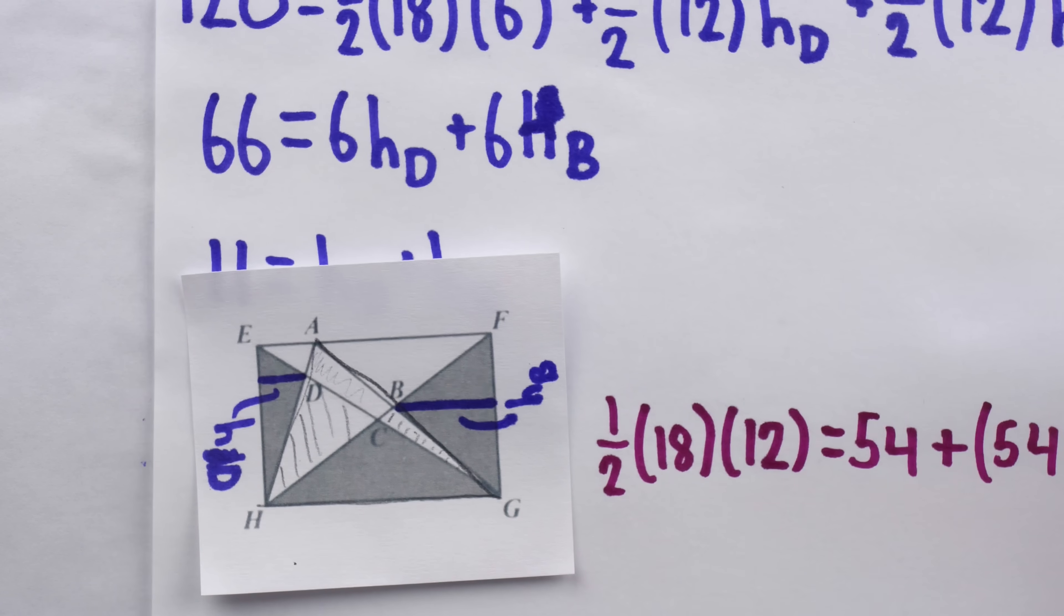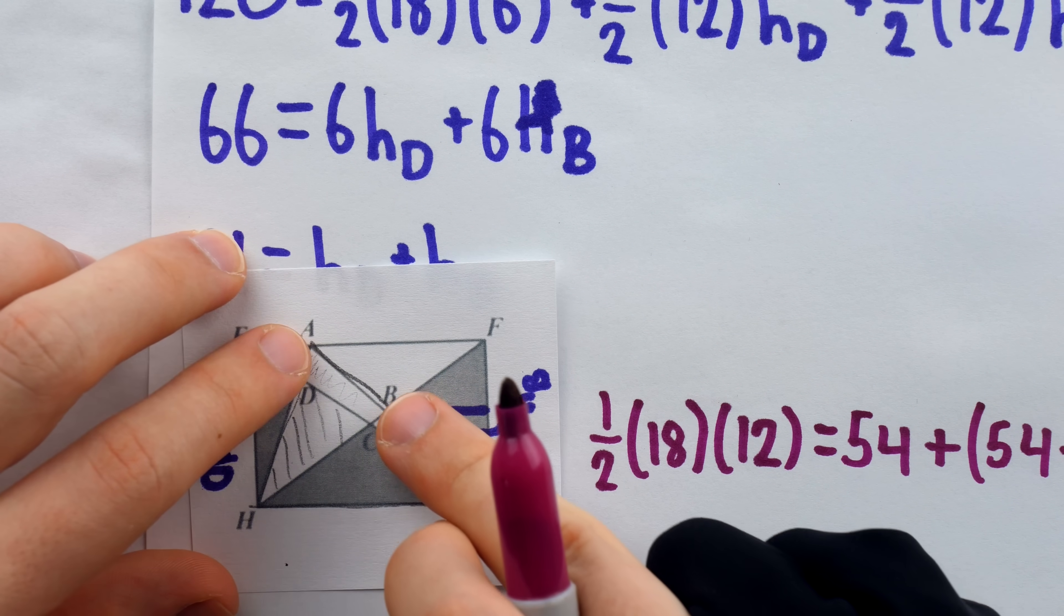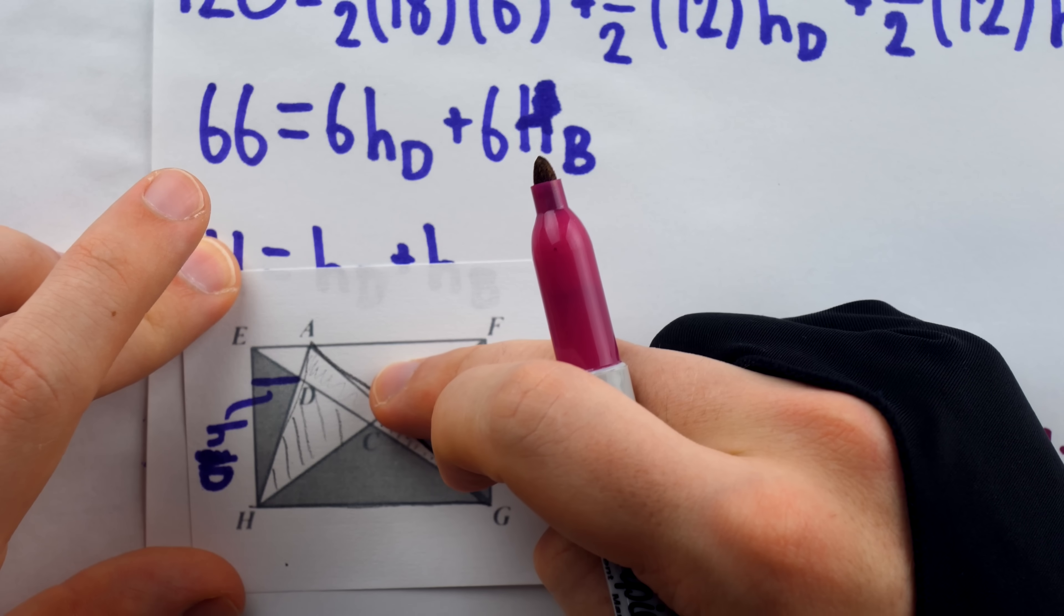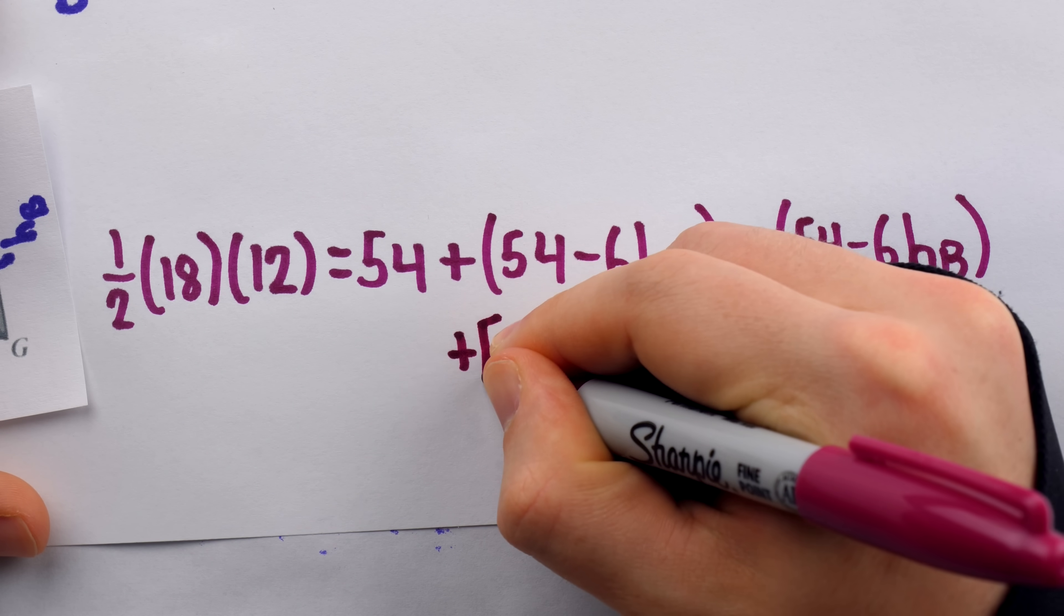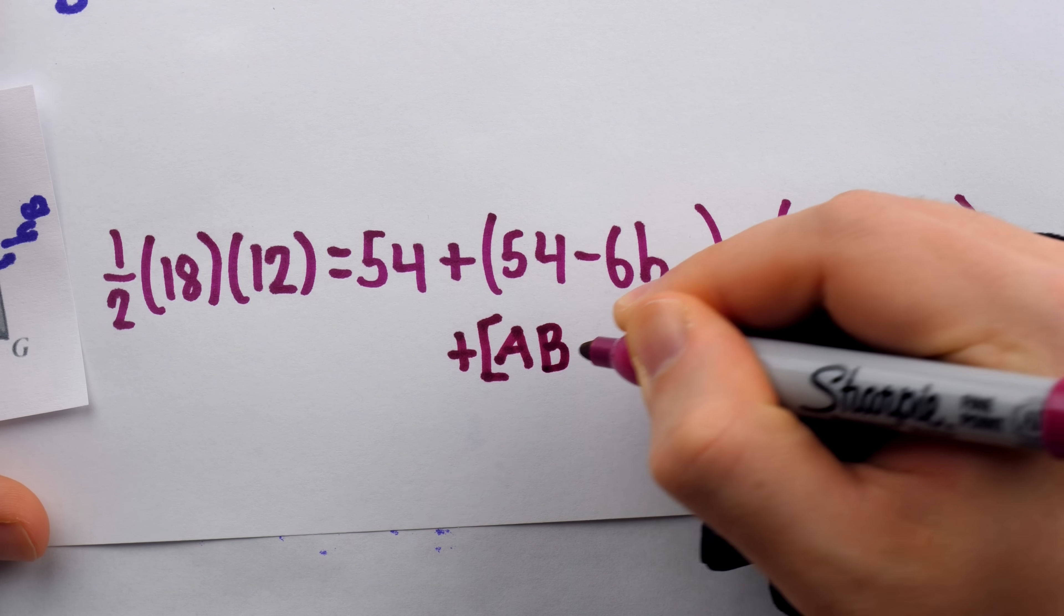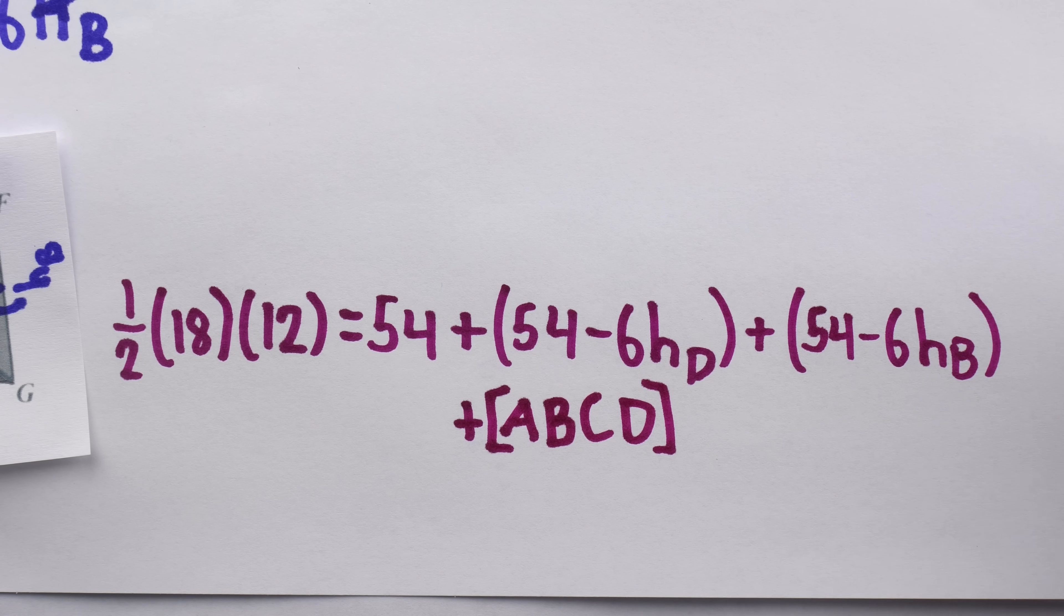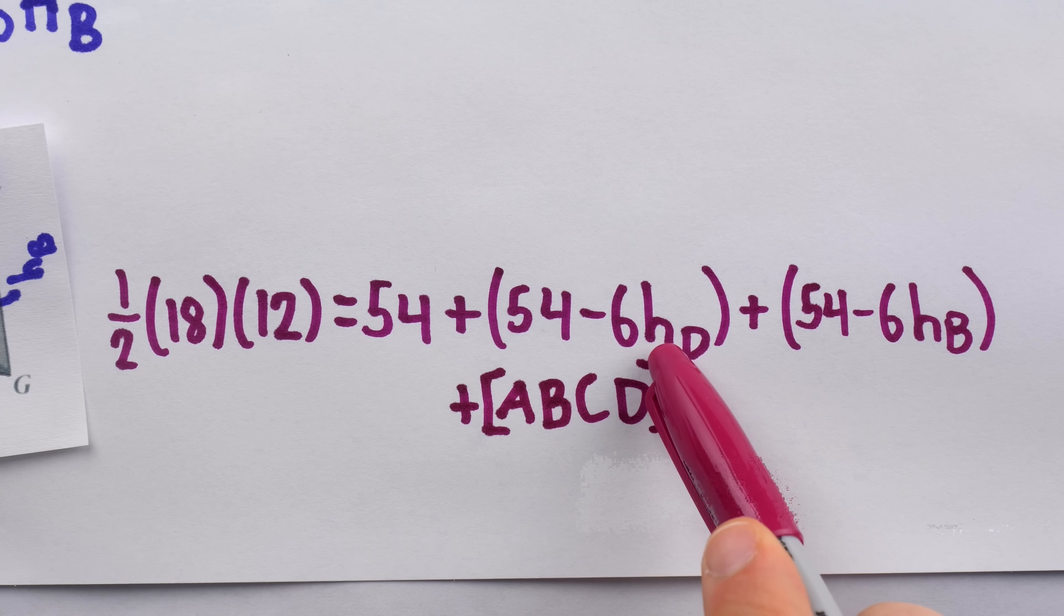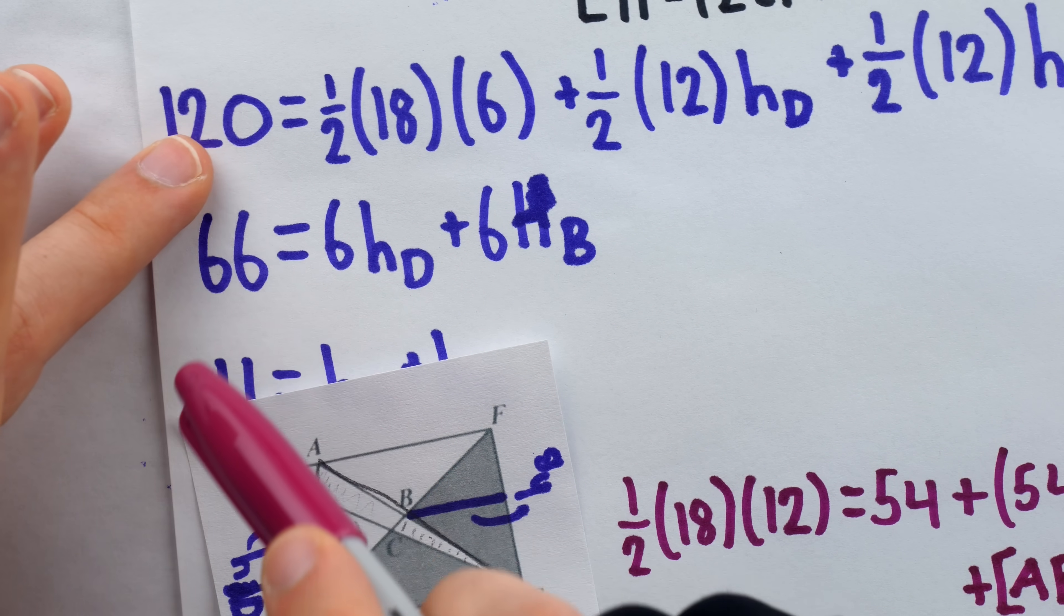The only part left to make up the entire area of the triangle HAG, is that unknown quadrilateral ABCD. Forgive me having to go to a second line to add in that last bit of area, which we'll denote with square brackets. So, the area of quadrilateral ABCD. You can see now, the solution will quickly give way. Negative 6h_D minus 6h_B can be turned into 6h_D plus 6h_B by factoring out a negative. We know that is 66.